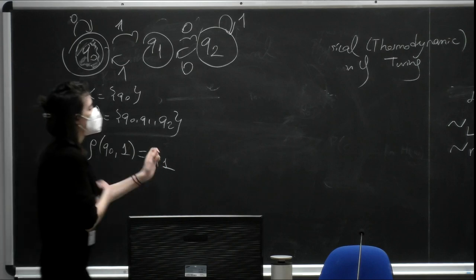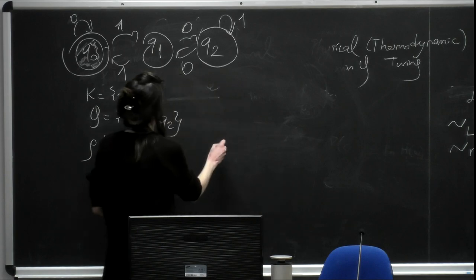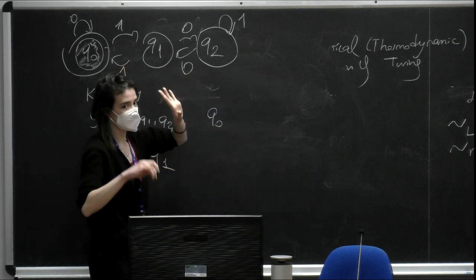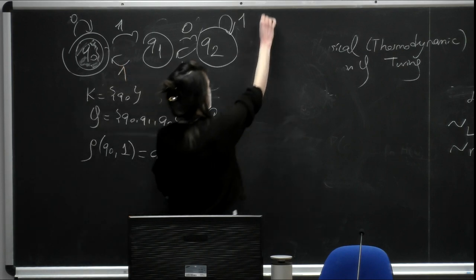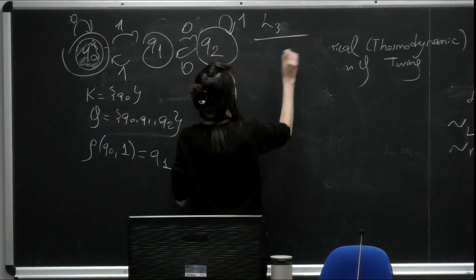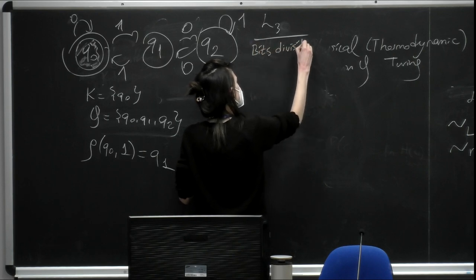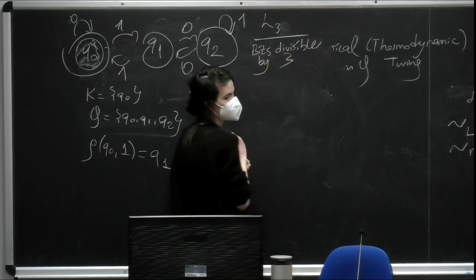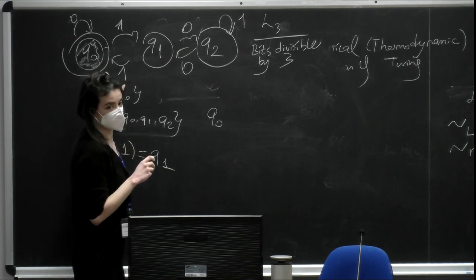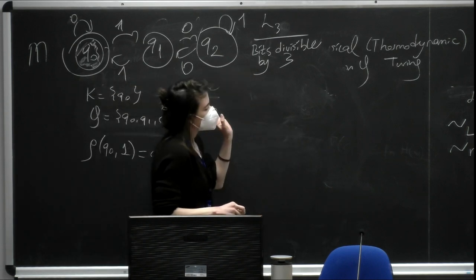We also define another equivalence relation over the DFA itself. Two strings are equivalent over the DFA if, starting from the start state and processing those strings, you end up in the same state after reading both of them — regardless of string length. So tilde_M: you start from Q0, you process these different strings, and if you end up in the same state, they are equivalent to one another over the DFA.